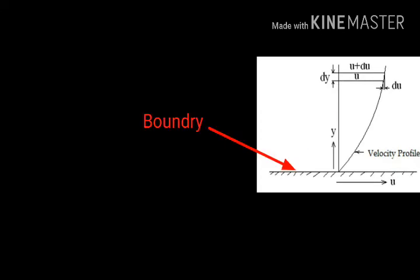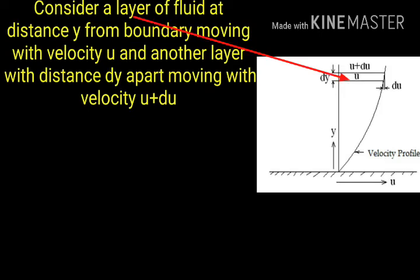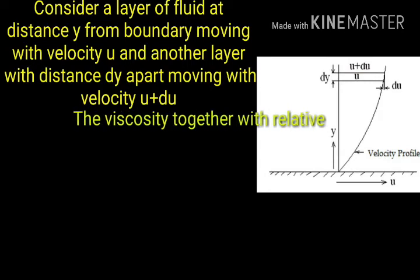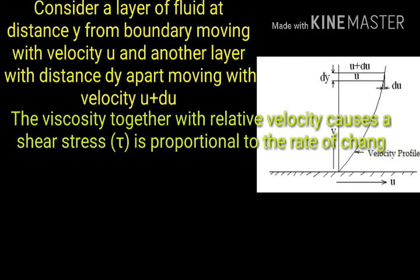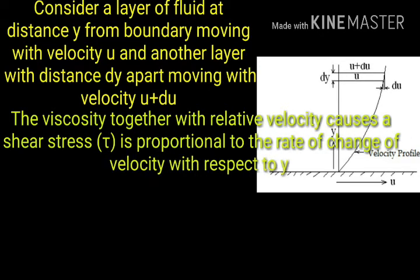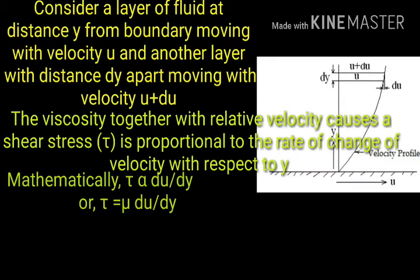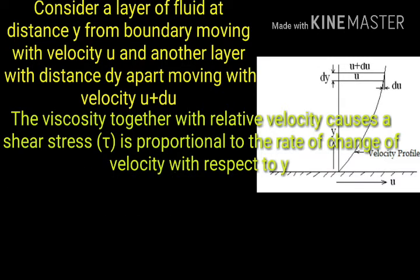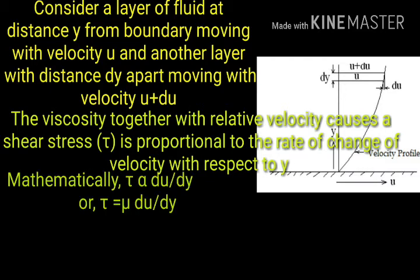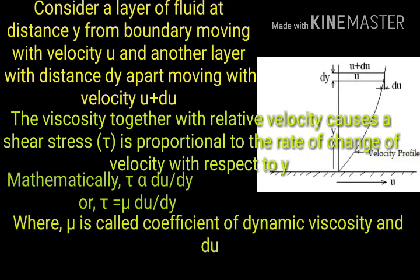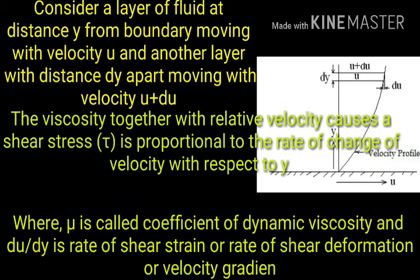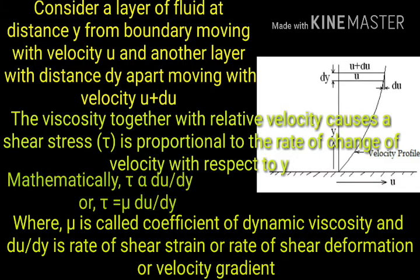Consider a layer of fluid at distance y from boundary moving with velocity u and another layer with distance dy apart moving with velocity u plus du. The velocity together with relative velocity causes a shear stress τ proportional to the rate of change of velocity with respect to y. Mathematically, τ = μ(du/dy).